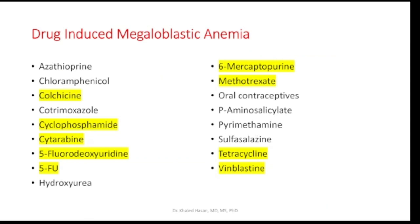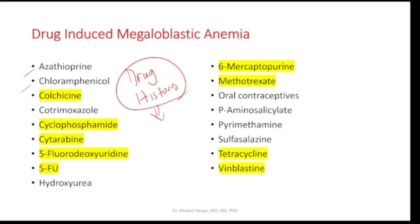Drug-induced megaloblastic anemia is very important — we need to take a drug history from the patient. If the patient is taking any medications such as azathioprine, chloramphenicol, colchicine, clotrimazole, cyclophosphamide, cytarabine, 5-fluorouracil, mercaptopurine, methotrexate, tetracycline, oral contraceptives, or sulfasalazine — this list of medications may cause megaloblastic anemia.